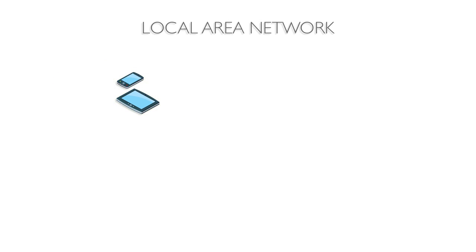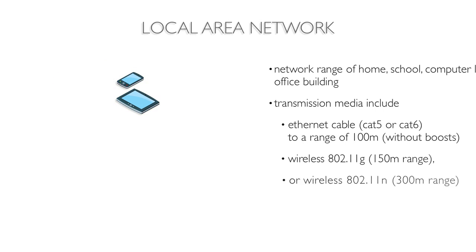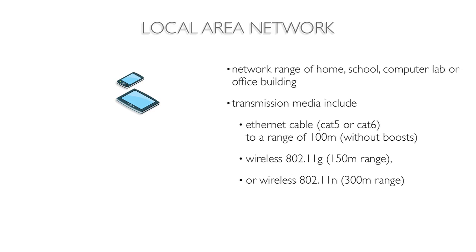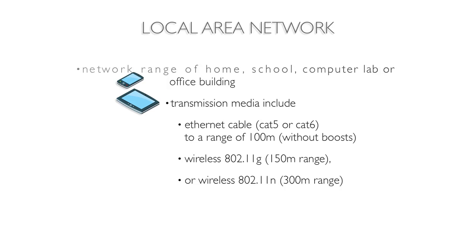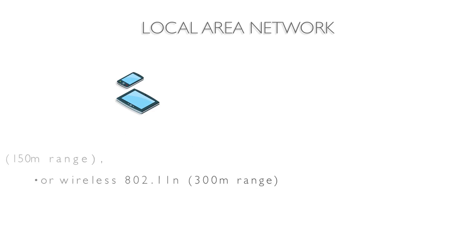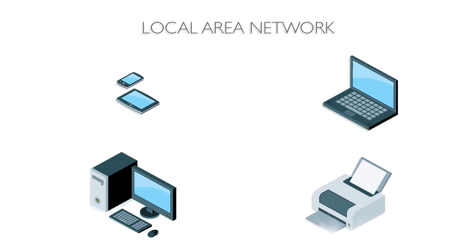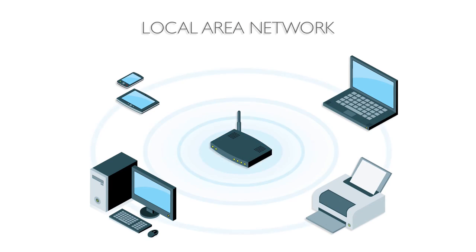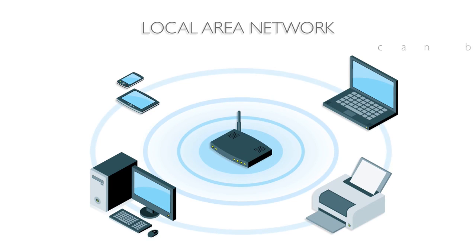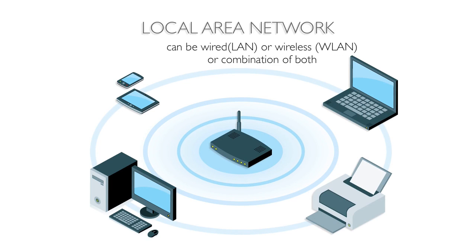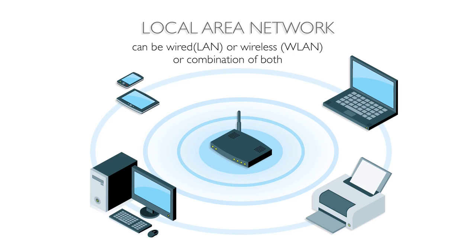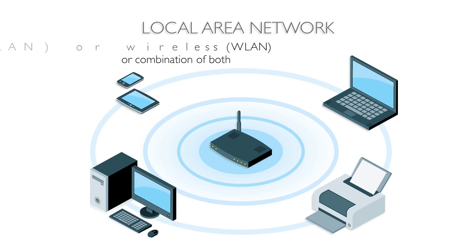A local area network extends the geographic range from 10 meters to 300 meters. LANs are often found in homes, schools, computer labs, or office buildings. Devices include desktop computers, laptops, printers, and a central switch or wireless router to allow for connectivity and data transfer. Typically, LANs are arranged in a star topology around a central routing device, but networks can be wired or wireless. Transmission media includes fibre optics for high-end networks or network storage, but generally use Ethernet cable or 802.11x Wi-Fi.